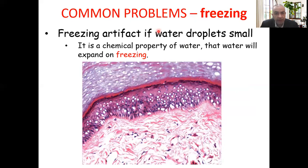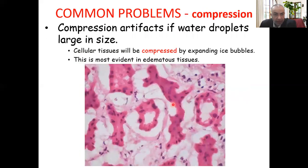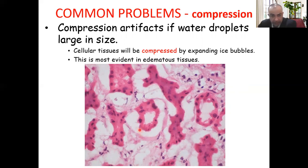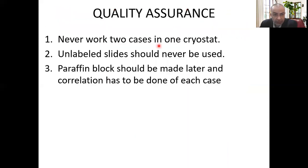Freezing artifacts occur when there are small water droplets, leading to clear areas especially beside the nuclei and at the epithelium. When the water molecules enlarge, they give compression artifacts with large oil droplets, leading to compression of kidney tubules. This is the kidney tubule compressed and distorted by the compression artifacts.